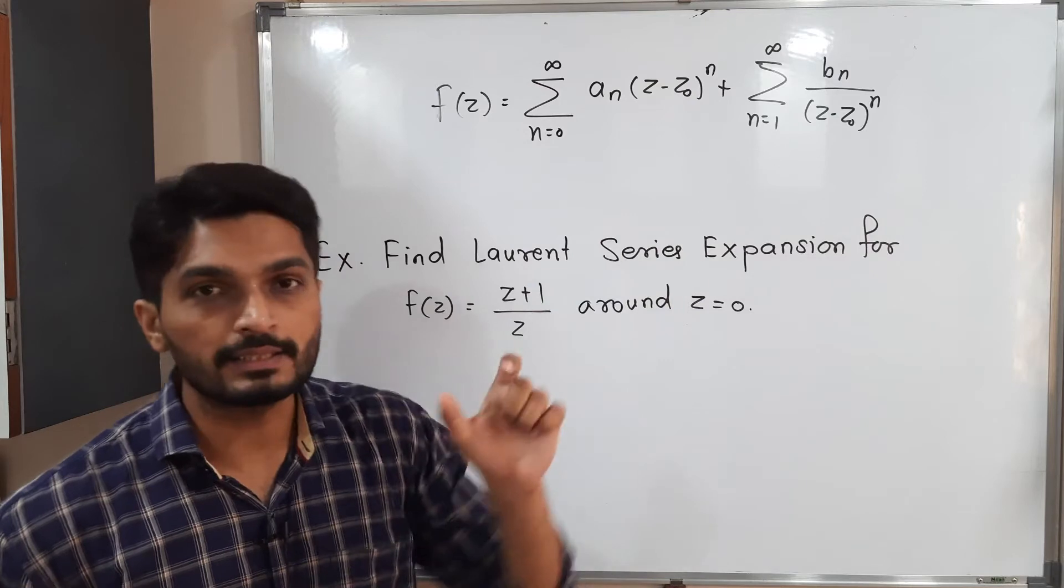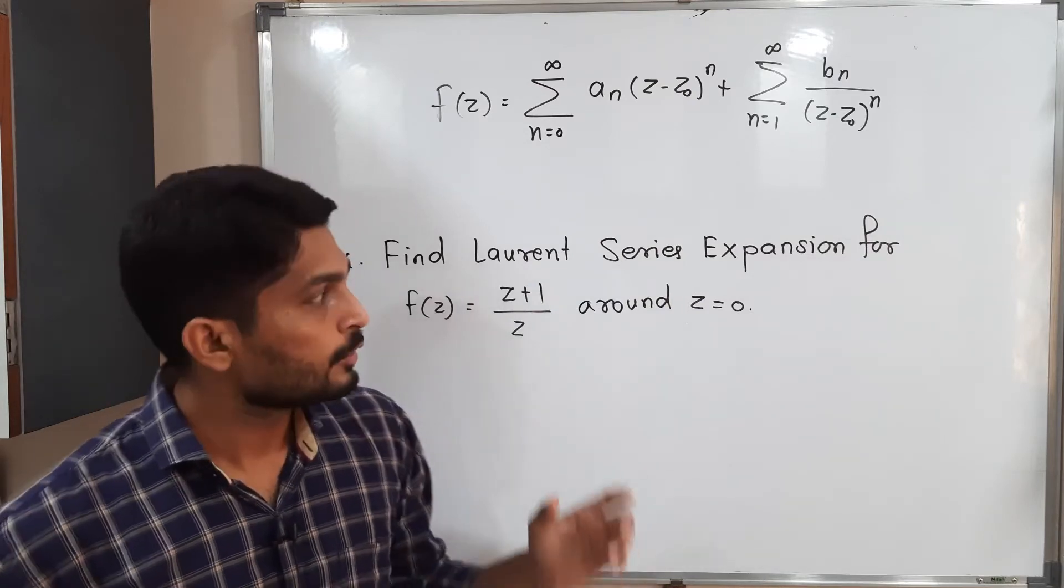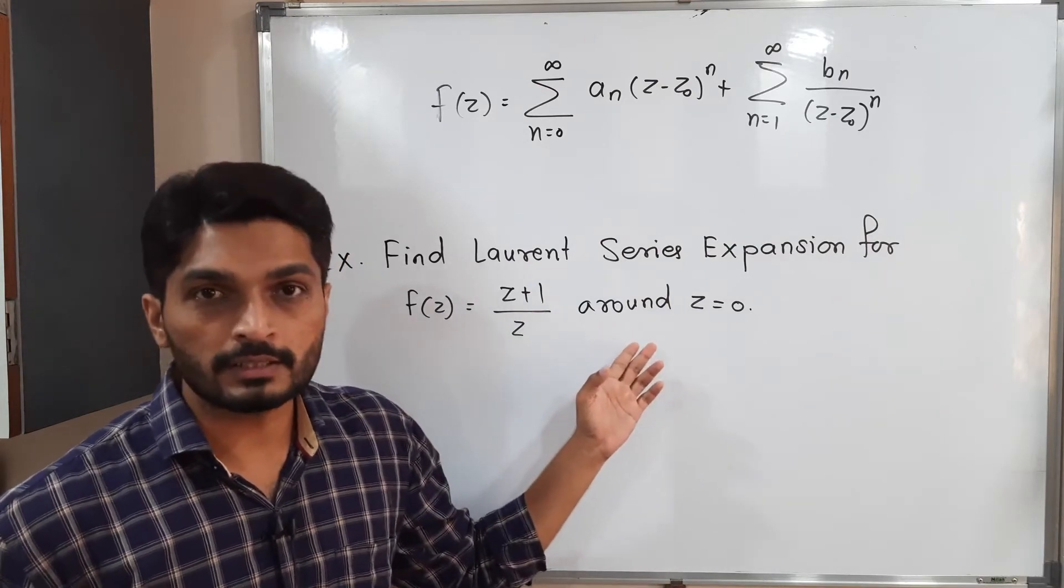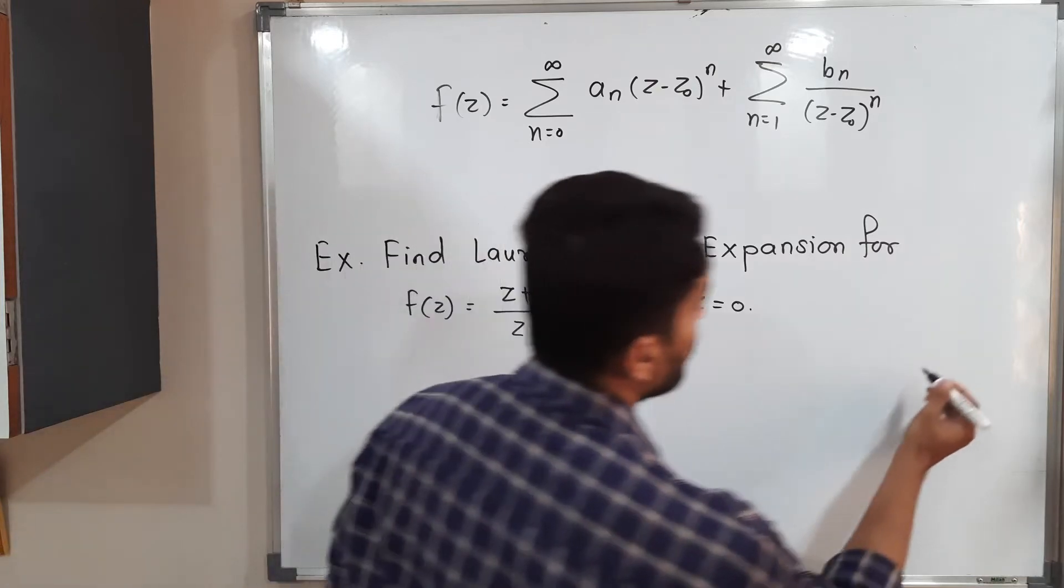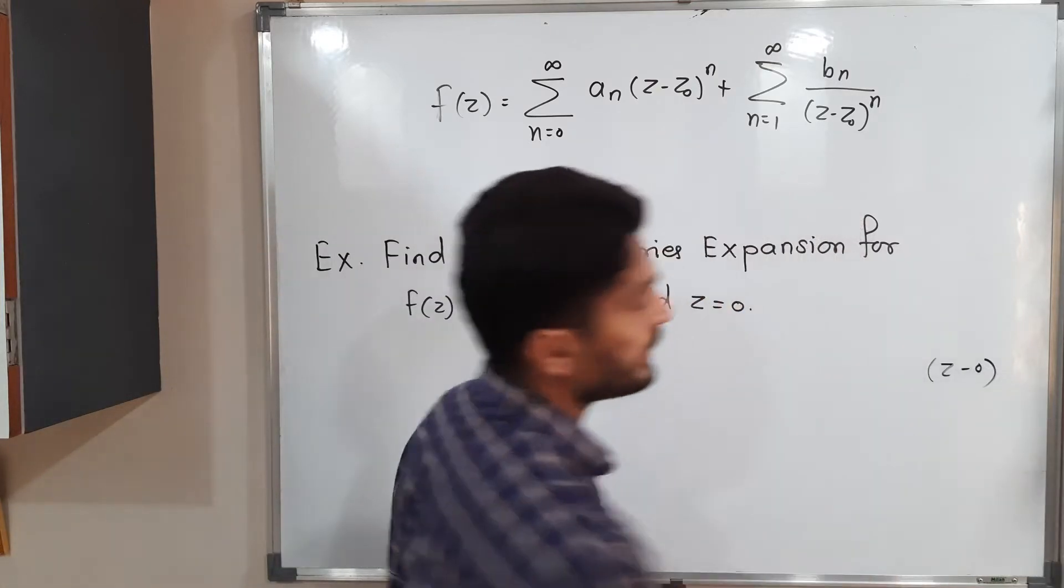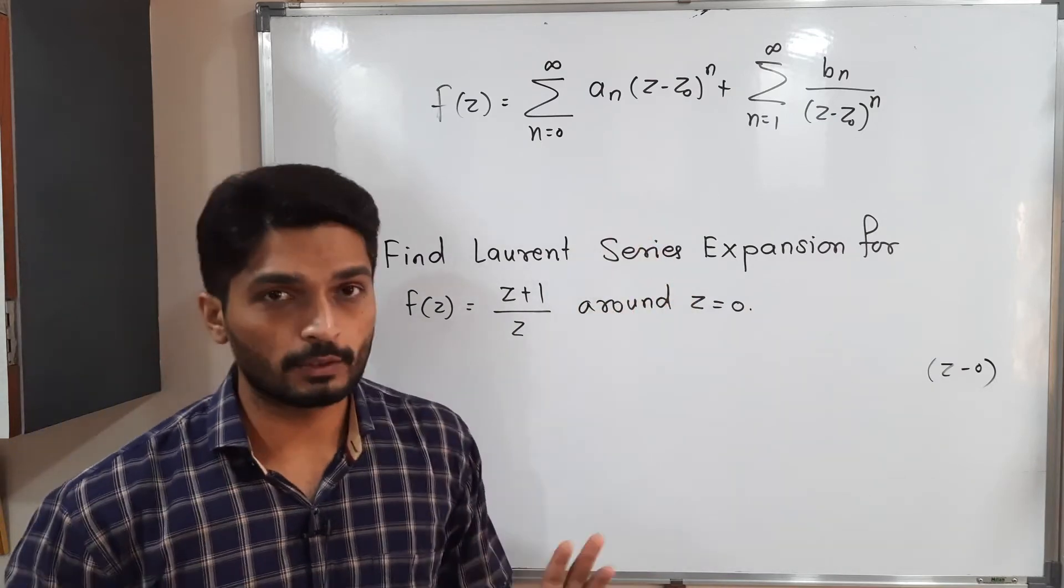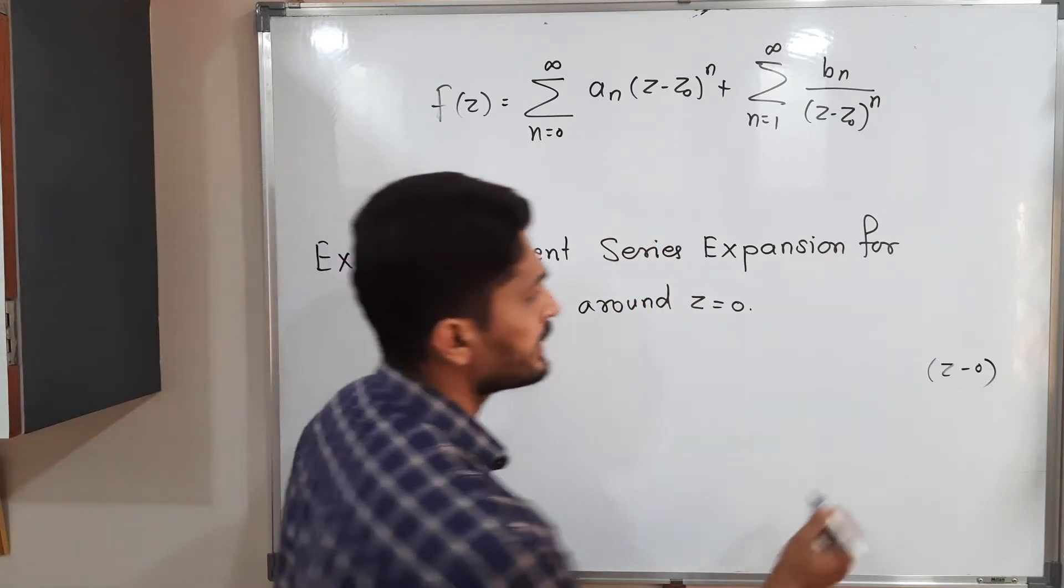You can easily see z minus z0 everywhere. Here we have to find Laurent series around 0, so our bracket should be z minus 0 everywhere. Since value of z0 is 0, z minus 0 is z itself.